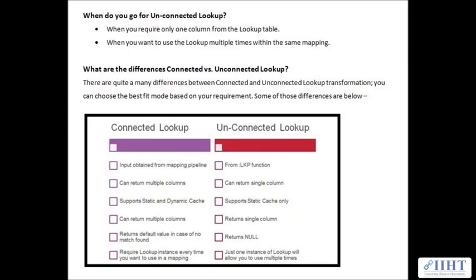The connected lookup returns a default value in case of no match found, while the unconnected returns null if no match is found. The connected lookup requires a lookup instance every time you want to use it in a mapping, but you can use an unconnected lookup multiple times in a single mapping with just a single instance.